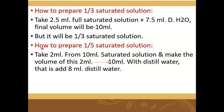For one-fifth saturated solution, take 2 ml from the 10 ml fully saturated solution and add 8 ml of distilled water. The final volume will be 10 ml — this is how you prepare the one-fifth saturated solution.